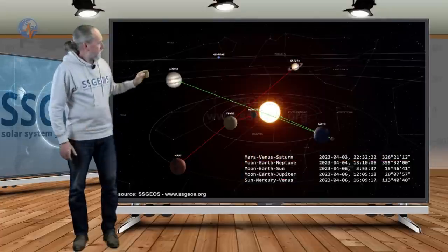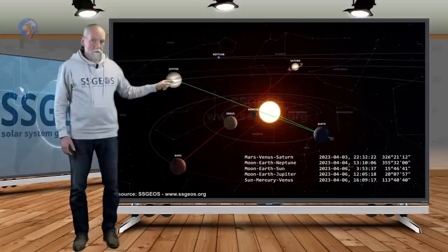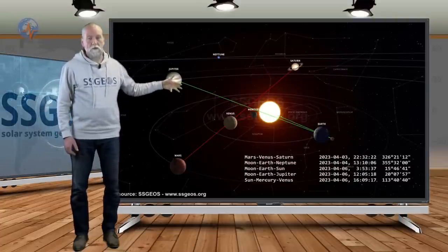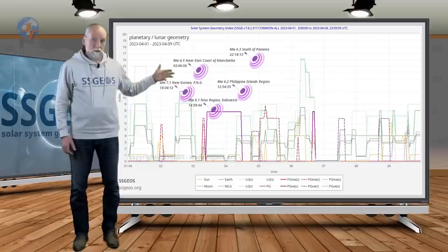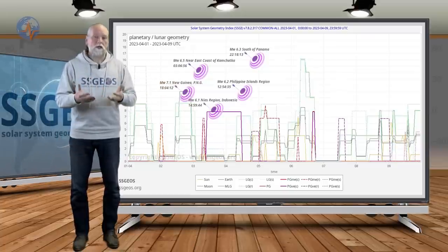Remember the Venus-Mercury-Sun conjunction occurred in the afternoon of the 6th, just following the full moon. If we count two days we end up later on the 8th, that's today, so tonight or tomorrow.